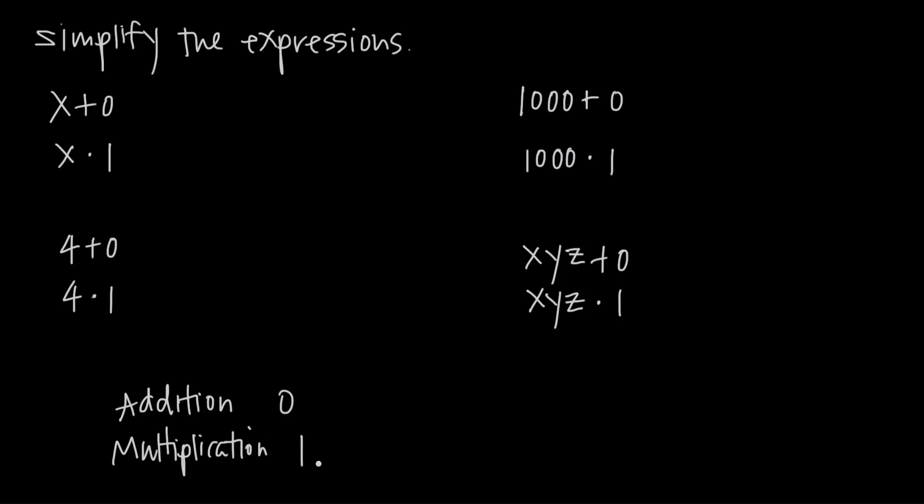And we call these the identity number because we can always add 0 to something, and it will keep its identity. In other words, its value won't change. We can always multiply by 1, and whatever we're multiplying won't change. It'll keep its identity. So in other words, these numbers have no effect on the identity when we're adding 0 or when we're multiplying 1.